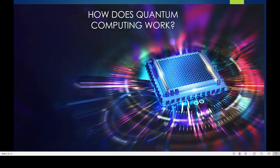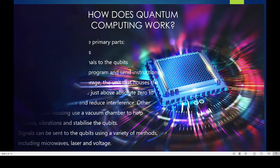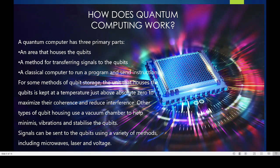Coming to the working of a quantum computer. A quantum computer has three parts: an area that houses qubits, which is kept at a temperature just above absolute zero, a method for transferring signals to the qubits, and a classical computer to run the program and send instructions.